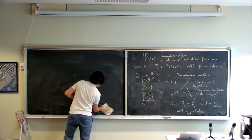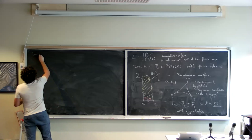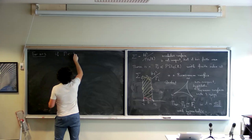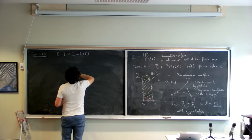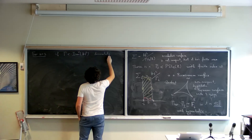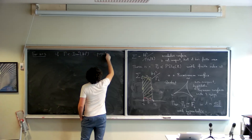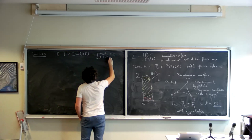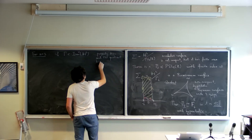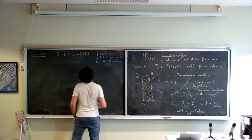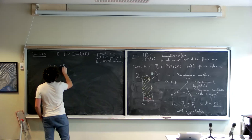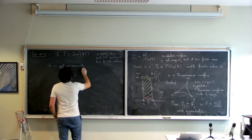In dimension two things don't go too wrong, but in dimension three things can go wrong in a much worse setting. For n=3: if Γ acts on H3 properly discontinuously and the quotient has finite volume, it is not necessarily the case — and mostly not the case — that Γ is word hyperbolic.